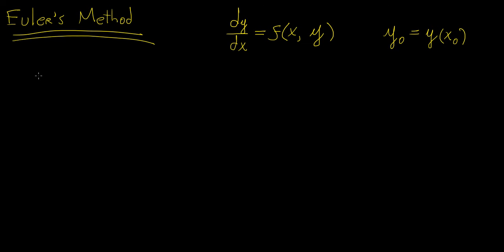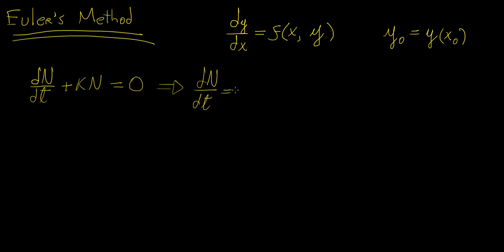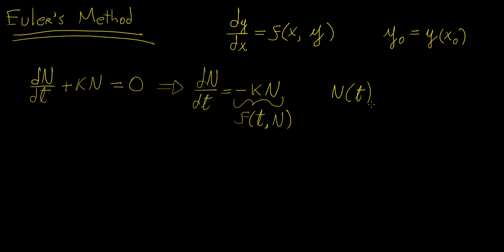Let's say we have the equation dn/dt + kn = 0. We want to express everything in terms of the first derivative. Rearranging gives dn/dt = -k·n, where k is a constant. This right-hand side is a function of two variables — a function of t and n — because n itself is a function of time. Sometimes you can also have an expression that explicitly has t involved in it.